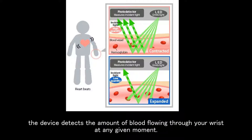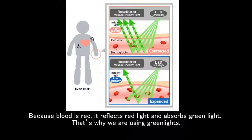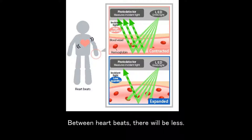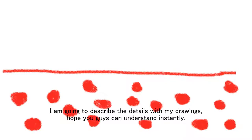The device detects the amount of blood flowing through your wrist at any given moment. Because blood is red, it reflects red light and absorbs green light. That's why we are using green light. So when your heart beats, there's more blood flow in your wrist and more green light absorption. Between heartbeats, there will be less. I'm going to